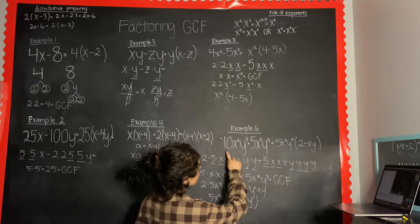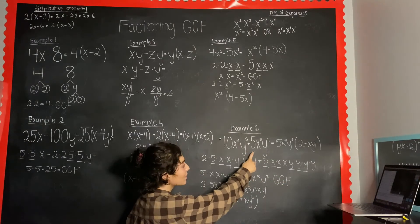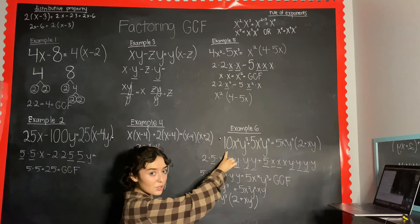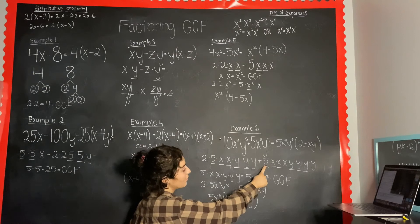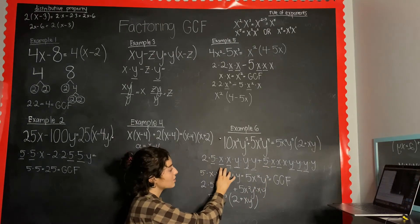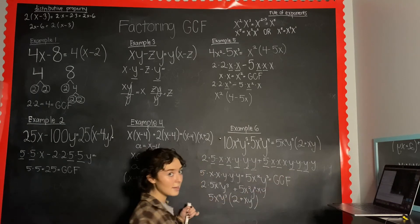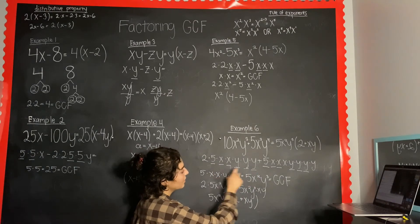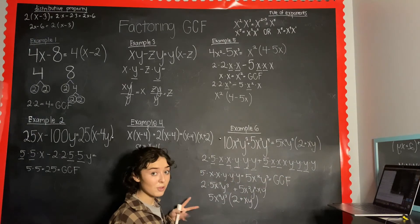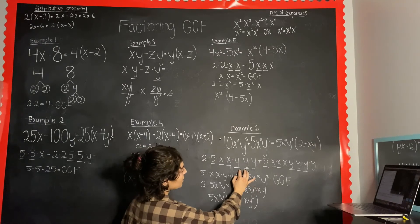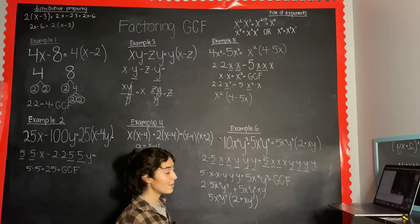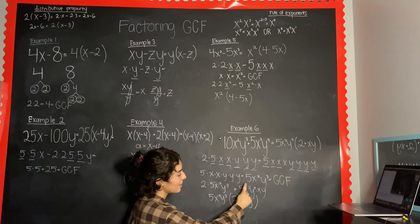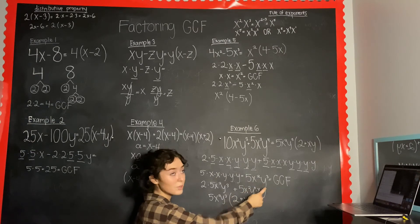Last example: 10x²y³ plus 5x³y⁴. The prime factors of 10 are 2 and 5; prime factors of 5 are just 5. Write out all prime factors and separate all variables. I underlined the 5 since they both have it. This term has two x's, the other has three x's — so at least two x's in common. This term has three y's, the other has four y's — so at least three y's in common. Pulling out all common factors and multiplying gives a GCF of 5x²y³.